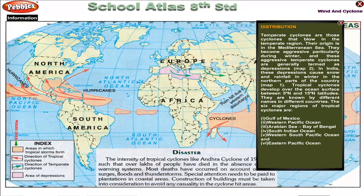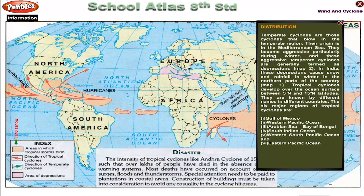Distribution. Temperate cyclones are those cyclones that blow in the temperate region. Their origin is in the Mediterranean Sea, and they become aggressive particularly during winter. These aggressive temperate cyclones are generally termed as depressions. In India, these depressions cause snow and rainfall in winter in the northern part of the country. Tropical cyclones develop over the ocean surface between 5 degrees north and 15 degrees north latitudes.